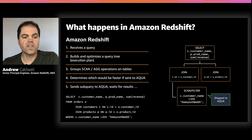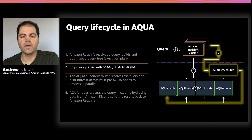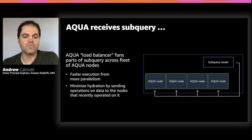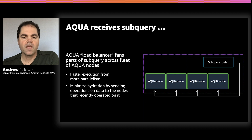At GA, Redshift is looking for scans and aggregations that contain LIKE and SIMILAR TO — those are the ones it will choose to send to Aqua. Redshift identifies an appropriate subquery, packages it up, and sends it off to Aqua. Aqua receives the subquery and distributes it across multiple nodes in the Aqua fleet for execution. The Aqua routing layer knows what data was hydrated into Aqua nodes as part of a previous subquery execution, and it can direct new queries on the same or mostly the same data to those same nodes to reduce the need for rehydration and provide greater speed-up. Aqua fans each subquery out across an entire Aqua fleet.